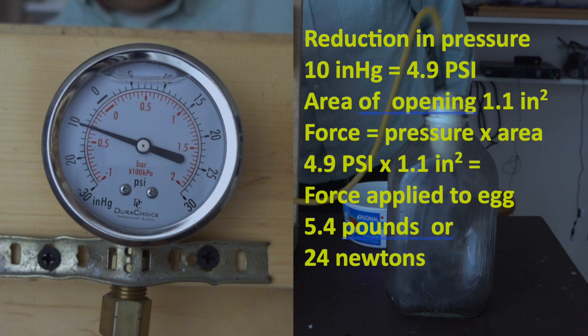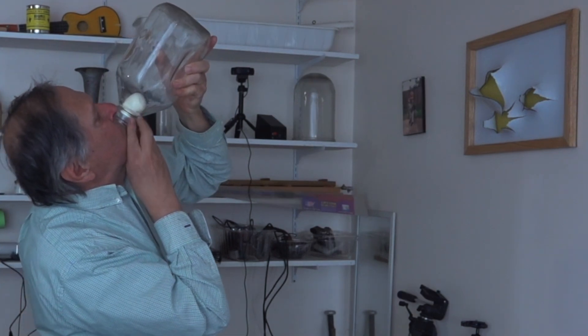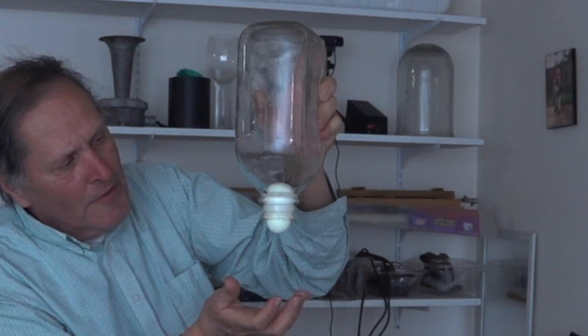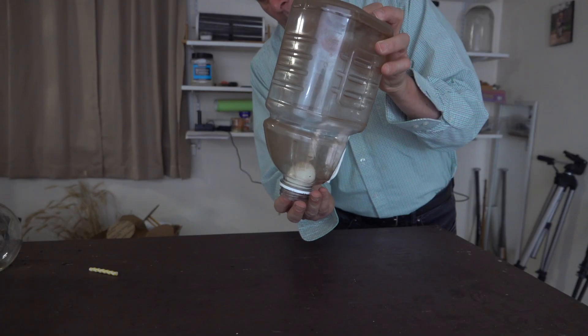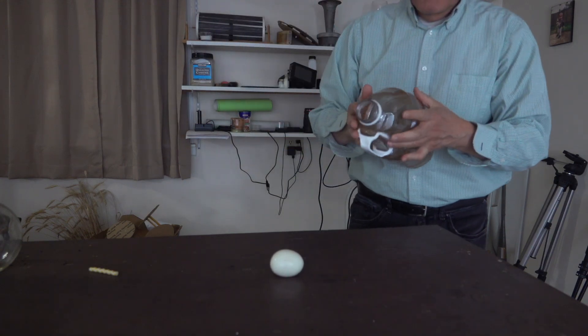If we measure the size of the opening, we can calculate that the atmosphere applies about five and a half pounds of force to push the egg into the bottle. That's actually more than what's needed, as a person can only blow about 2 psi of pressure, which is still enough to get the egg out of the bottle. Of course the amount of pressure needed will depend on the bottle and the size of the egg.